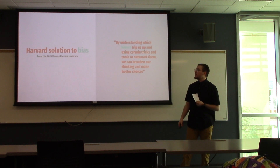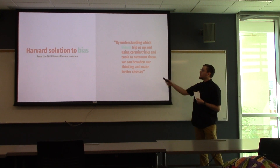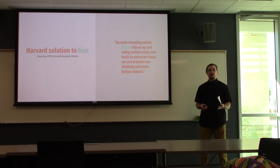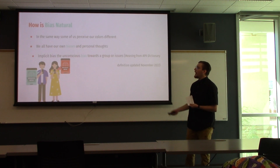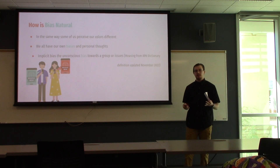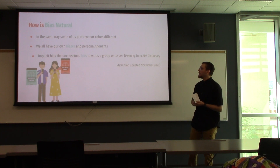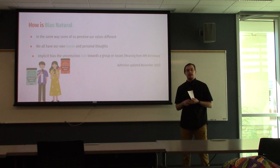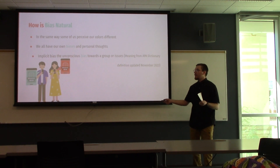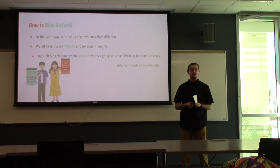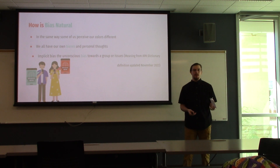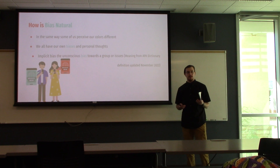Harvard's solution to bias, from the 2015 Harvard Business Review: 'By understanding which biases trip us up and using certain tricks and tools to outsmart them, we can broaden our thinking and make better choices.' Bias is natural — in the same way some of us perceive colors differently, such as being colorblind. We all have implicit biases, meaning unconscious biases toward groups and issues. For example, if I told everyone to think of a spoon, you could picture a plastic, wooden, or metal one — that difference in point of view reflects our own biases.